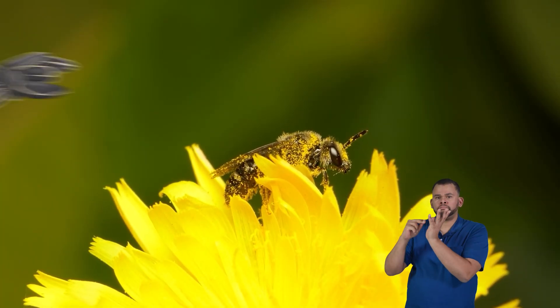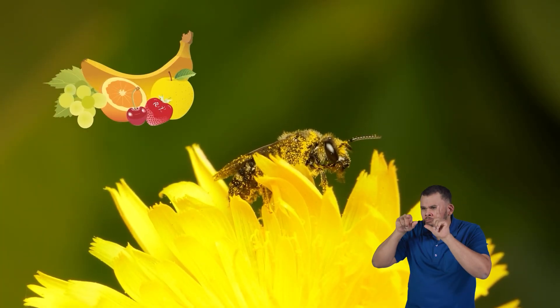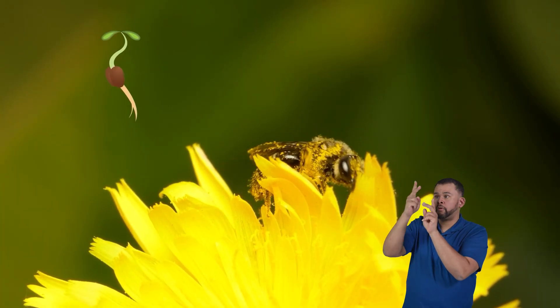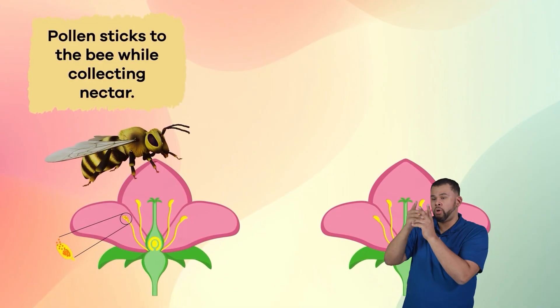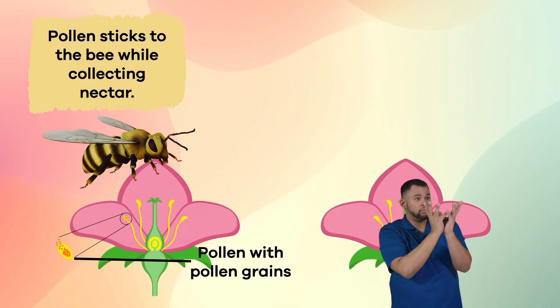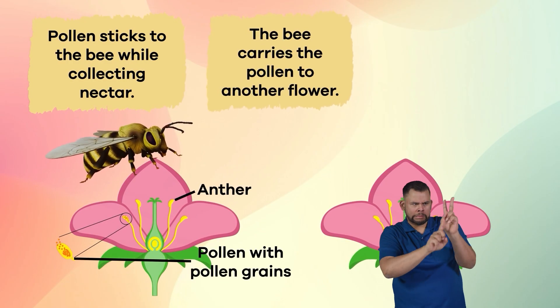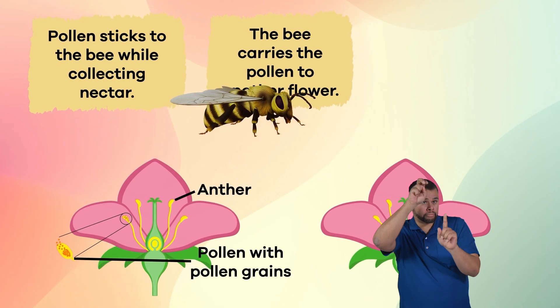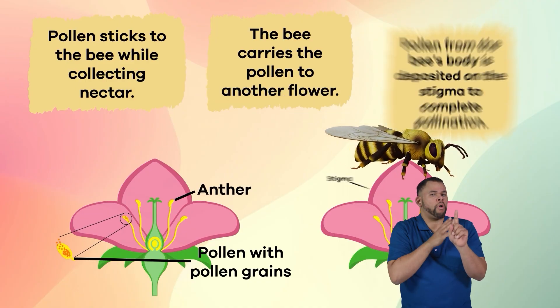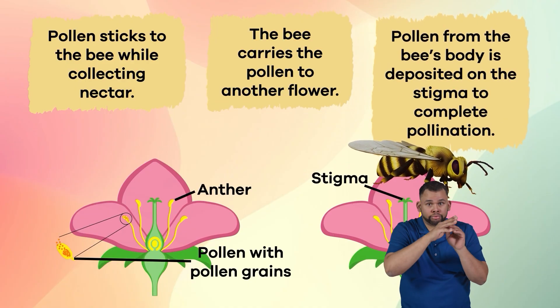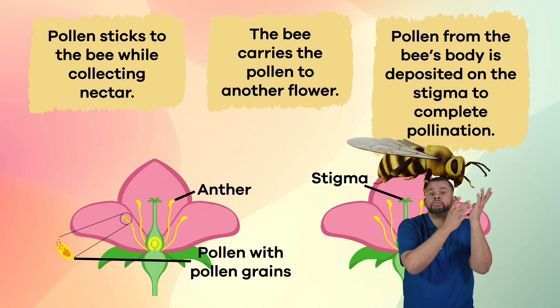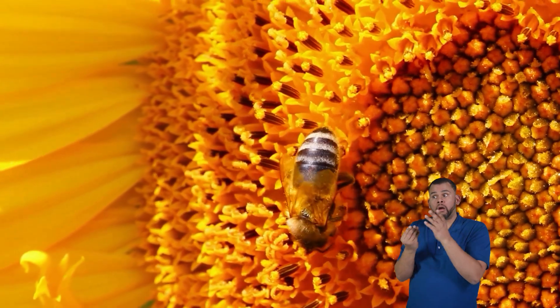Pollination happens when a pollen grain moves from the flower's anther — the male part — to the stigma, the female part. Wind and water help to transfer pollen, and some plants self-pollinate.